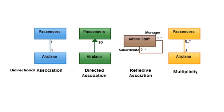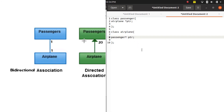Here we have a directed association. An association is called a directed association if it has an arrow. If it has one arrow then it is also called a unidirectional association. But if it has two arrows it would be treated as a bidirectional association. Here we have a unidirectional association that is also a directed association and it has a cardinality of 20. In a unidirectional association we have a pointer only in one class. Here Airplane has a pointer pointing towards the Passenger class — the arrow is pointing towards Passenger. So in C++, the Airplane class would have a pointer array of size 20 pointing towards the Passenger class.